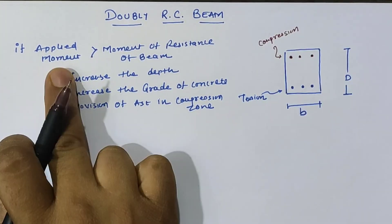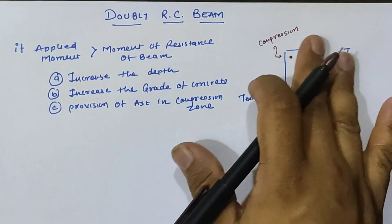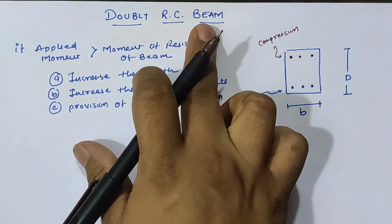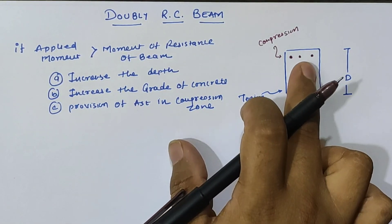This way, the moment of resistance is greater than the applied moment so the beam can carry the load. Such types of beams are known as doubly reinforced concrete beams when area of steel is provided in both the tension zone and compression zone.